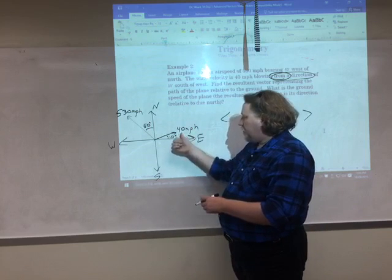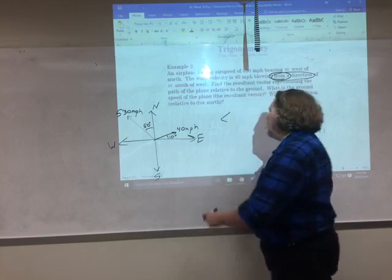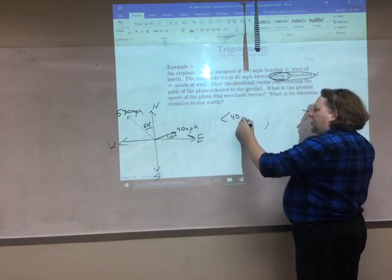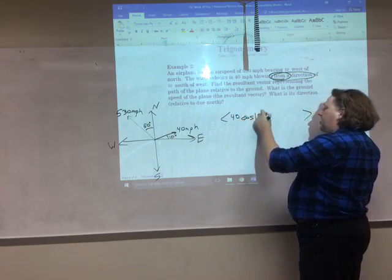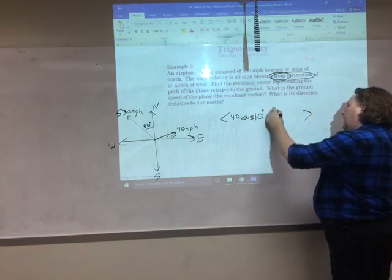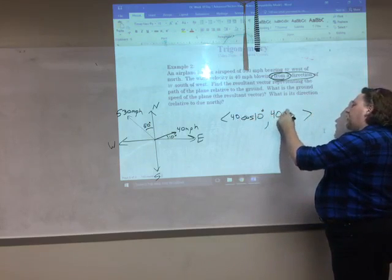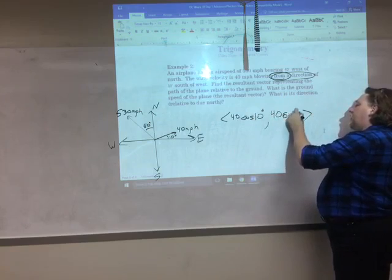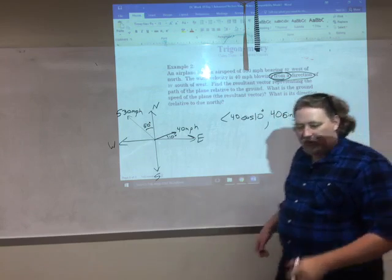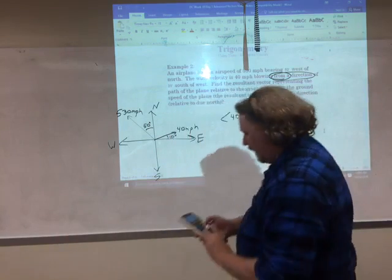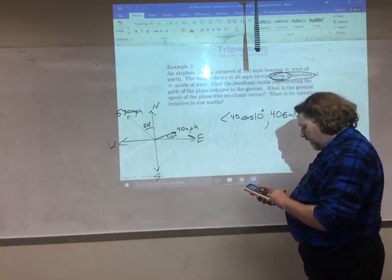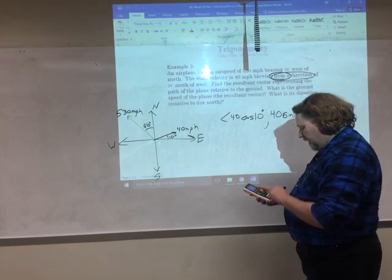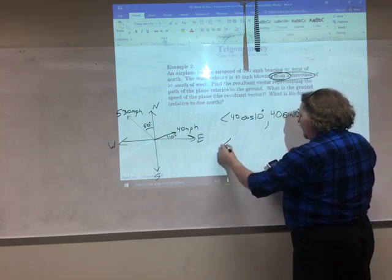I have 40 miles per hour and a 10 degree angle. So my components are going to be 40 miles per hour times the cosine of 10 degrees for the x component. And 40 miles per hour times the sine of 10 degrees for the y component. And here we go to the calculator. 40 cosine of 10, 40 sine of 10.